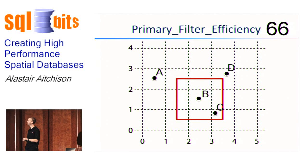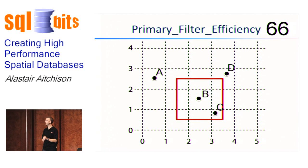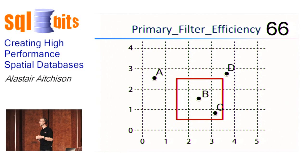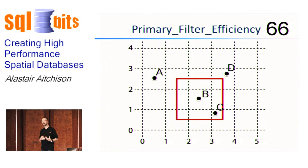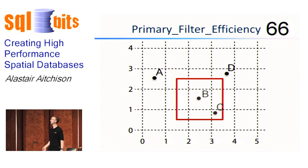Two efficiency measures we use. The first is called the primary filter efficiency. It's a measure of the number of rows selected by the primary filter, how many of them ended up being correct. So the primary filter selected B, C, and D, and of those B and C were correct. So our primary filter efficiency in this case was 66%.